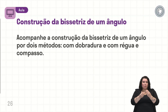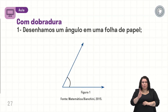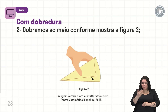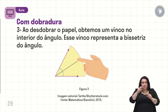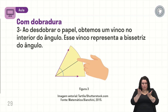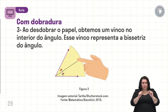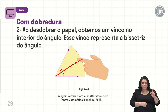Vamos verificar como podemos construir essa bissetriz com dobradura e com régua e compasso. Com dobradura é bem fácil: desenhamos um ângulo em uma folha de papel e dobramos ao meio. Ao desdobrar o papel, obtemos um vinco no interior do ângulo. Esse vinco representa a bissetriz, porque ao fazer essa dobradura estamos dividindo o ângulo em duas partes iguais — aqui e aqui são ângulos congruentes. Essa semirreta é a bissetriz do ângulo em questão.